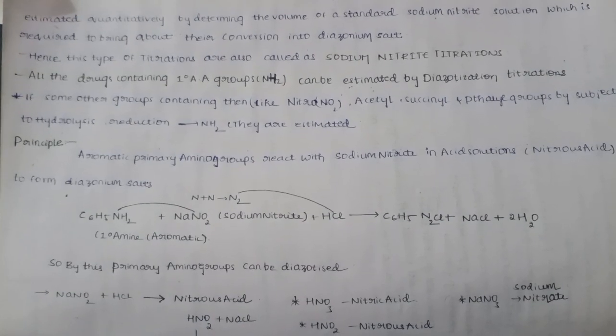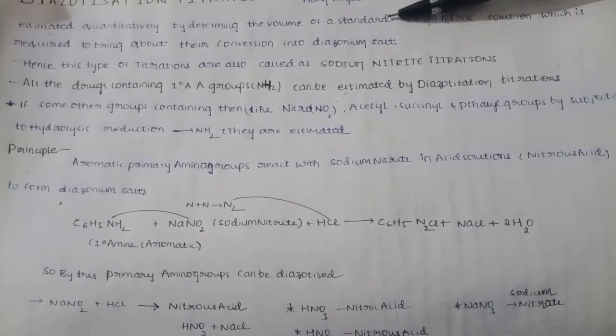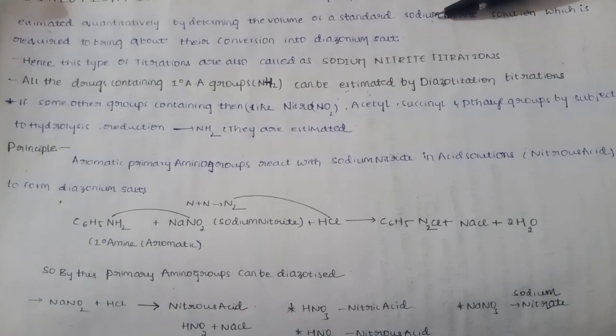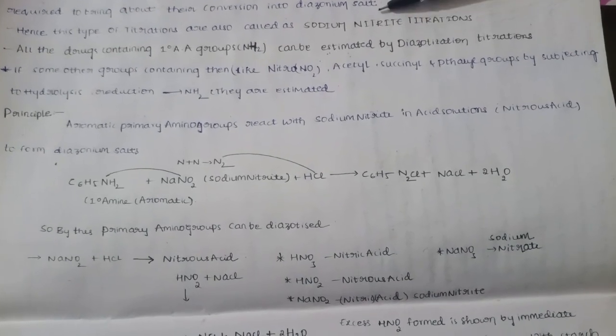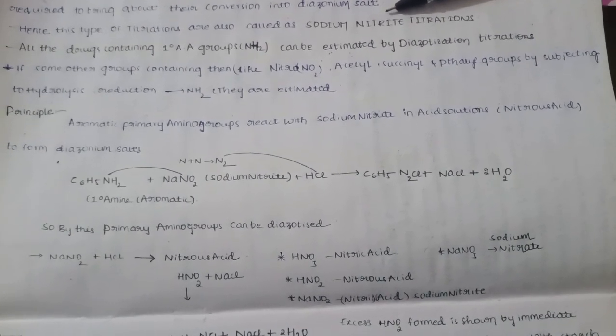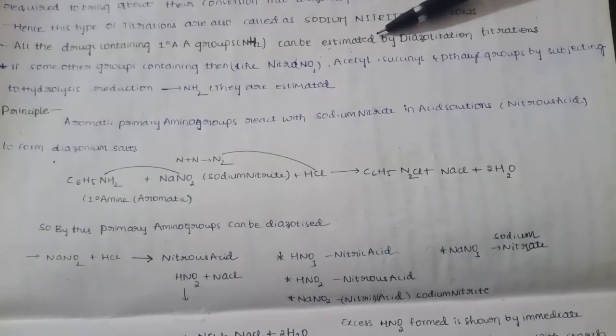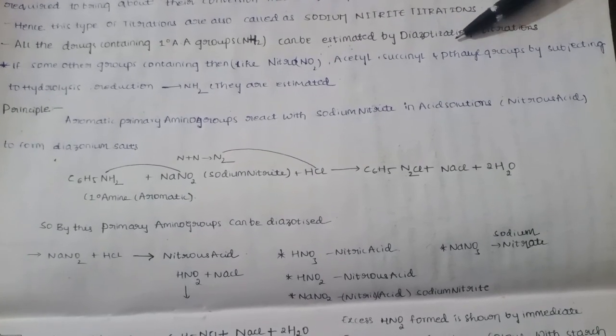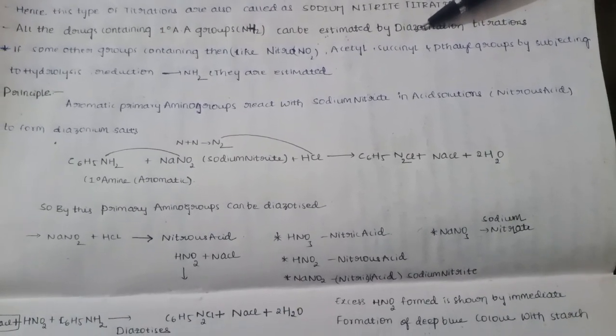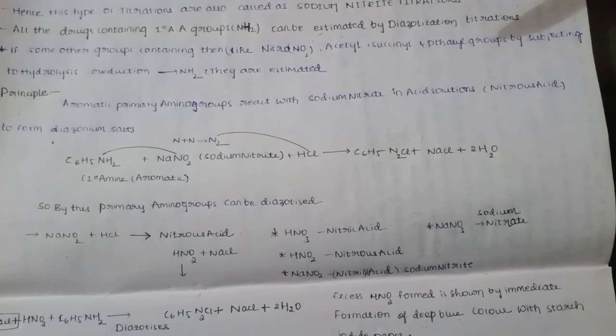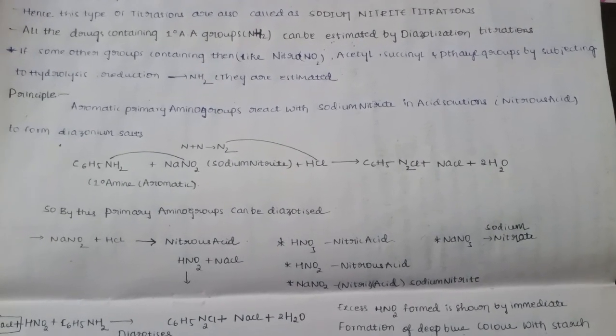All the drugs containing primary aromatic amino groups, that is NH2, can be estimated by diazotization reaction. These titrations can be used to estimate compounds if some other groups are present like nitro, acyl, succinyl, and phthalyl groups.